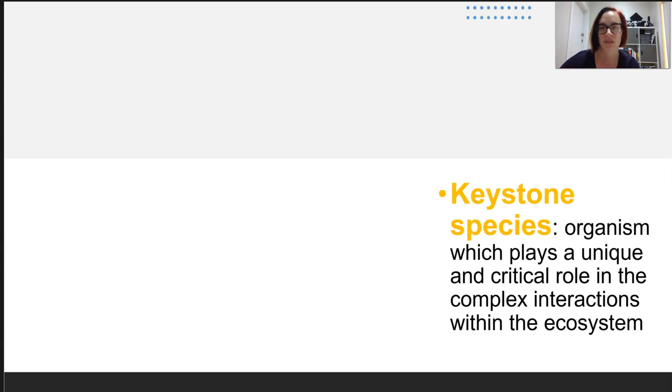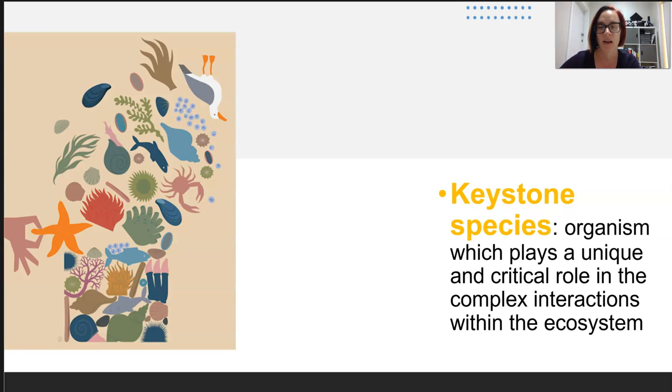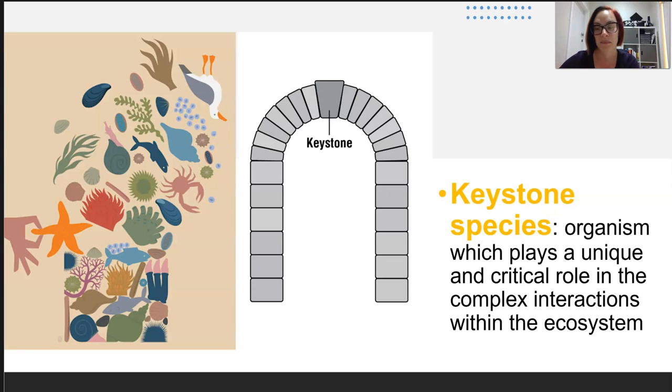A keystone species is a plant or an animal which plays a unique and critical role in the complex interactions within the functions of that ecosystem. A keystone in architecture is a block which is placed into an arch. So without it, all the other bricks would collapse. Because of the interconnectedness of all of the organisms in the food web, if you remove the keystone species, it will have a domino effect. And that impacts all the organisms' populations.